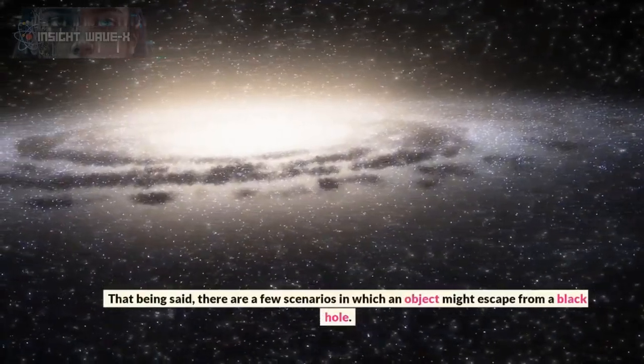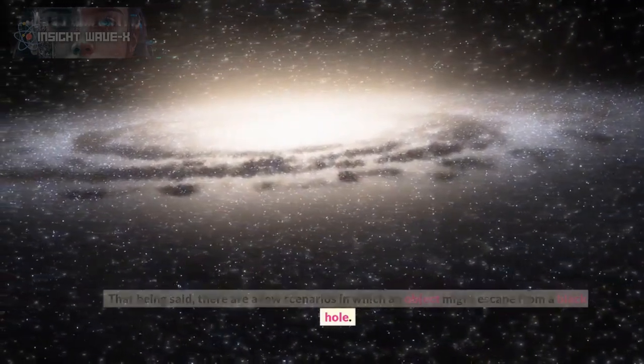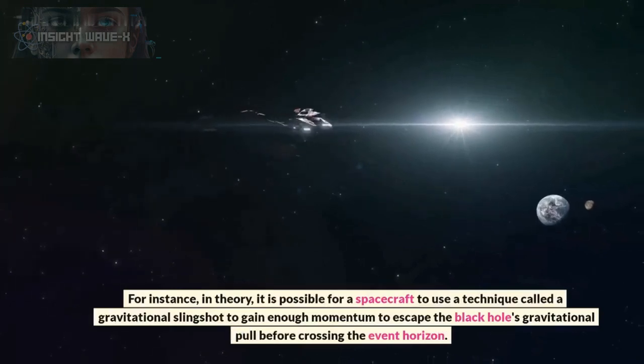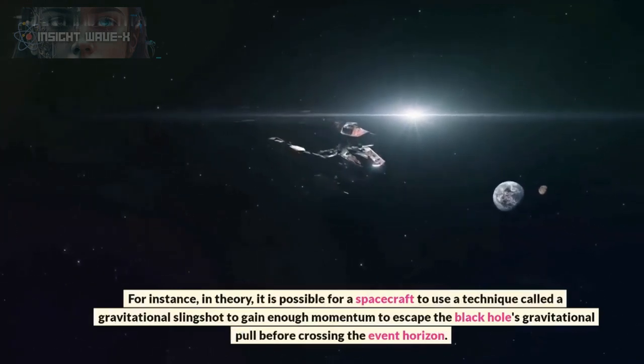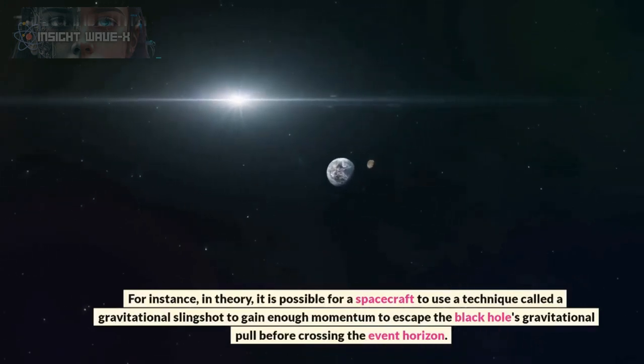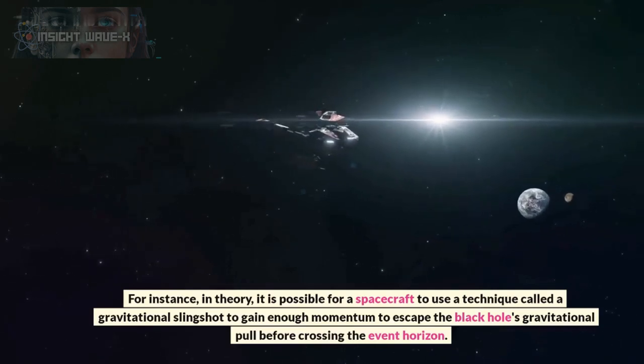That being said, there are a few scenarios in which an object might escape from a black hole. For instance, in theory, it is possible for a spacecraft to use a technique called a gravitational slingshot to gain enough momentum to escape the black hole's gravitational pull before crossing the event horizon.